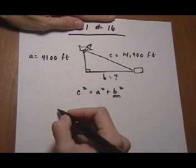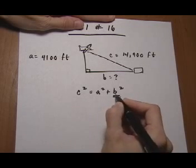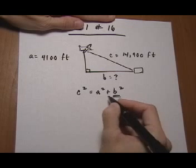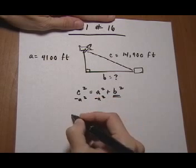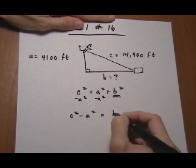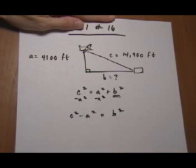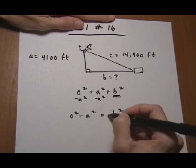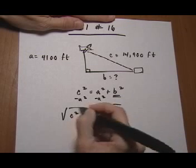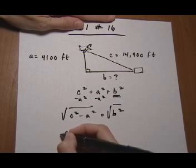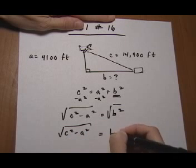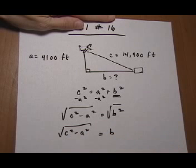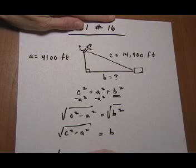First, let's not plug the numbers in right away. If we want to isolate B, because that's what we're solving for, let's take away A squared from both sides. So we have C squared minus A squared equals B squared. Now if I take the square root of both sides, the square root of C squared minus A squared is going to equal B. So now I can go ahead and plug in my values for C squared minus A squared.